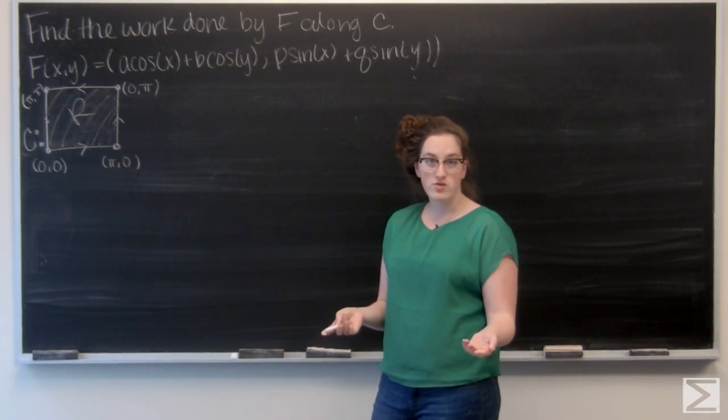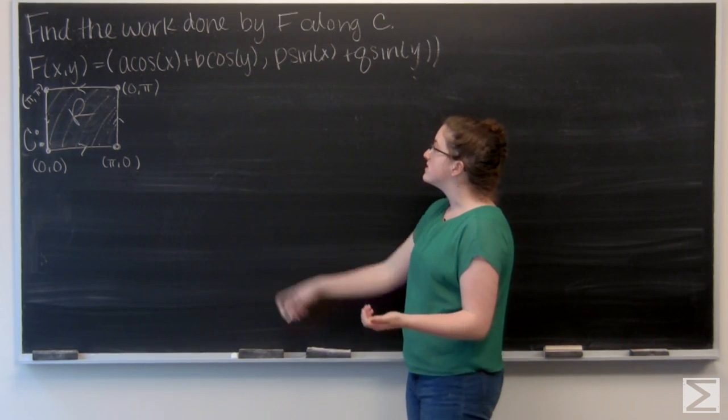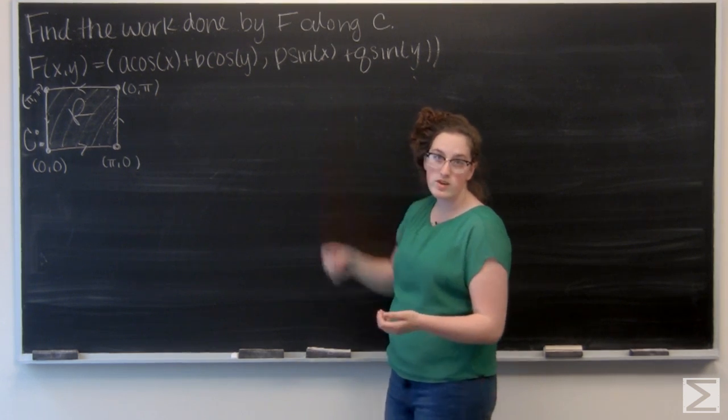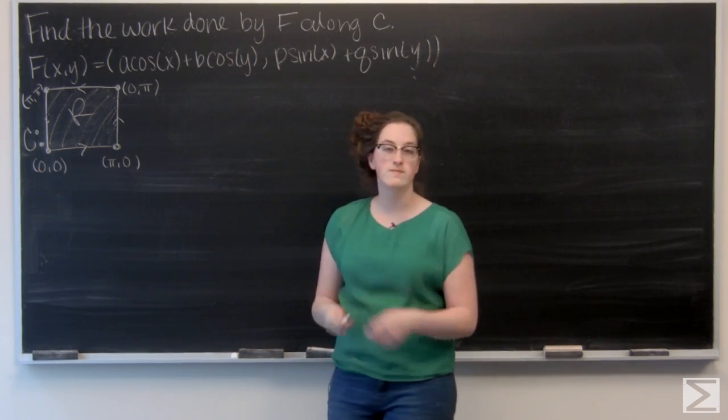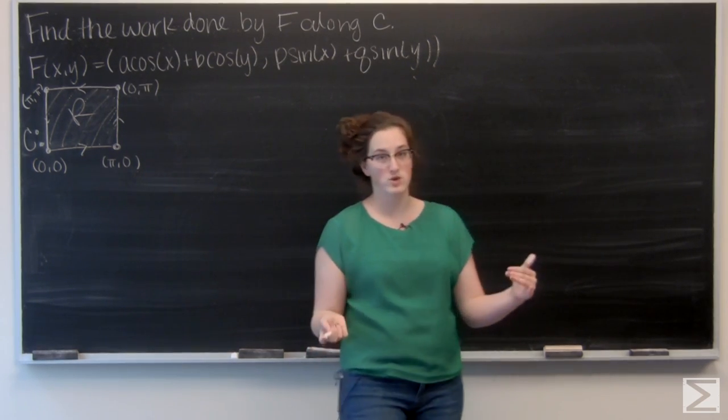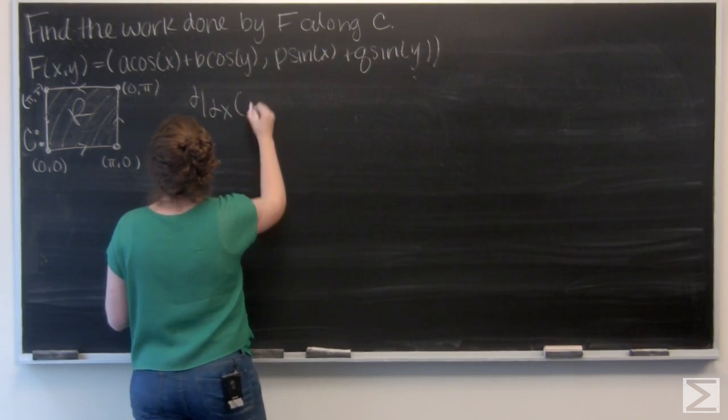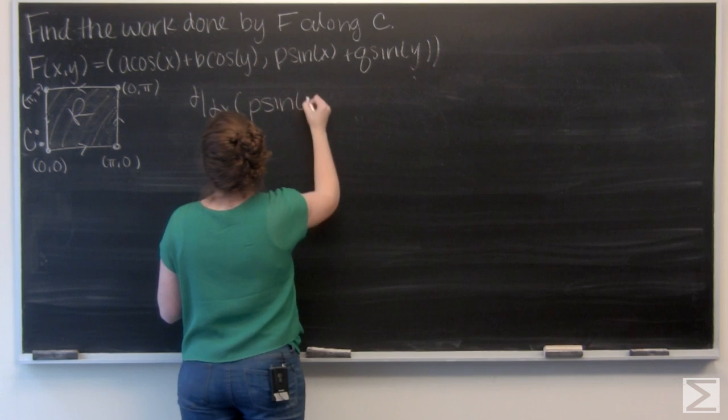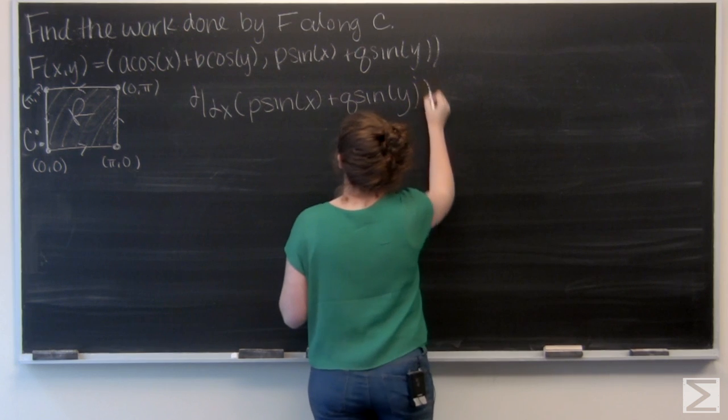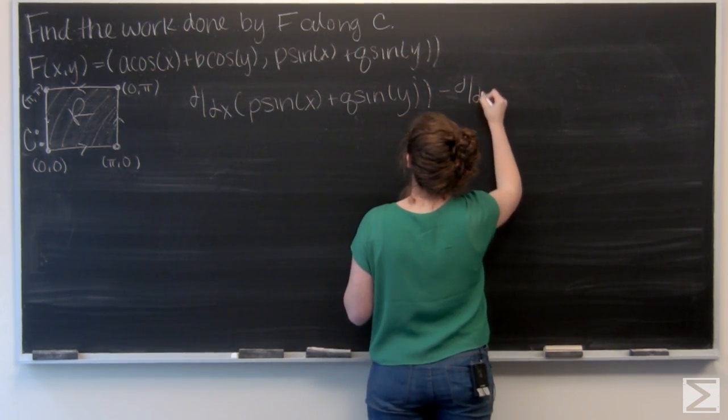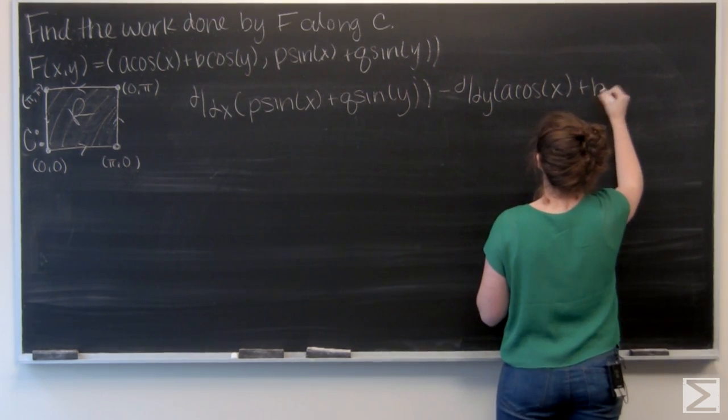And I need the two-dimensional curl of F to do that, so let's go ahead and do that first. Two-dimensional curl is the partial derivative with respect to x of the second component of the vector field minus the partial derivative with respect to y of the first component of the vector field. I'm going to write that out, then let's take those partial derivatives.